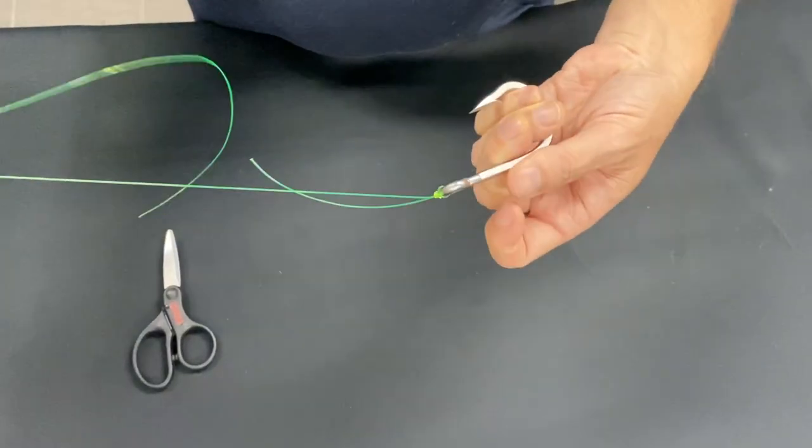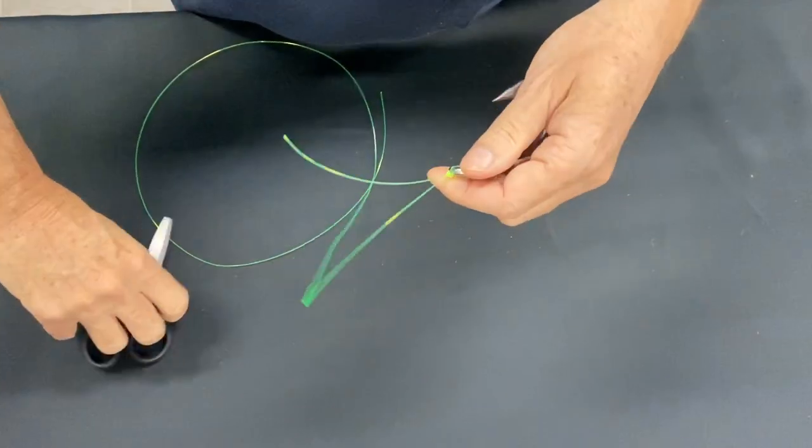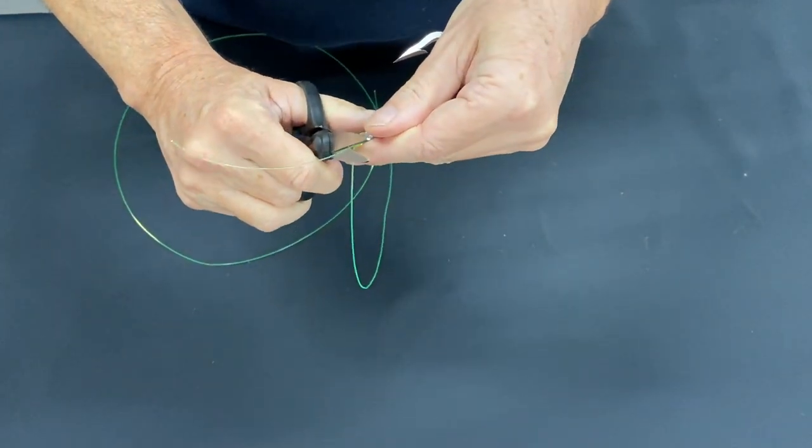Pull him up like that tight. Nice, there you go. Look at that, it's just a beautiful, neat knot. Get the scissors here, we can cut him up fairly close. No dramas here.